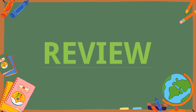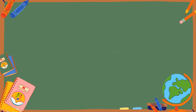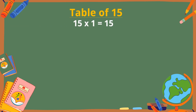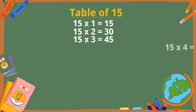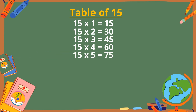Let's revise the table of 15. 15 ones are 15. 15 twos are 30. 15 threes are 45. 15 fours are 60. 15 fives are 75. 15 sixes are 90.